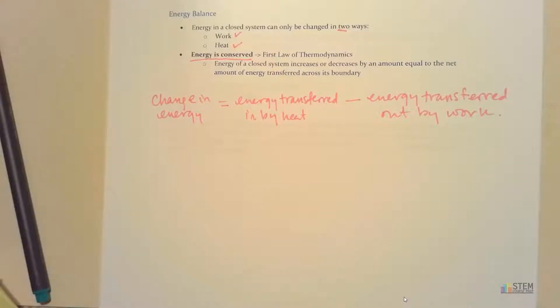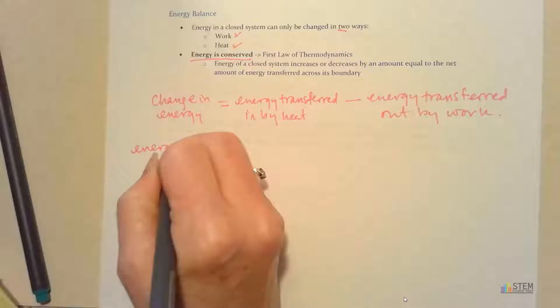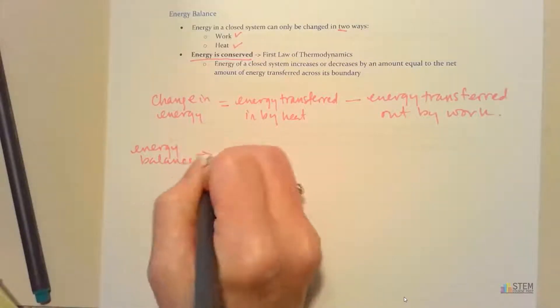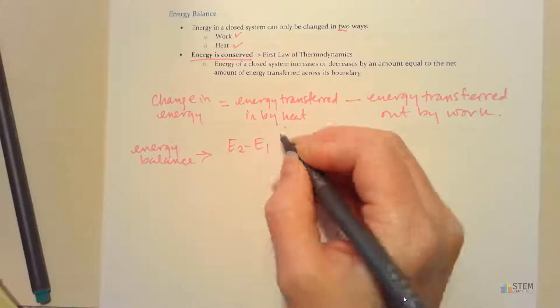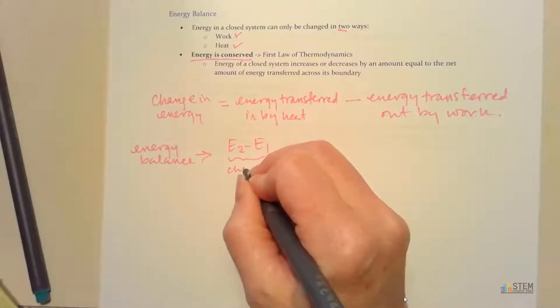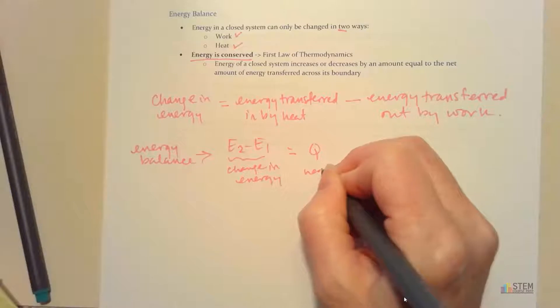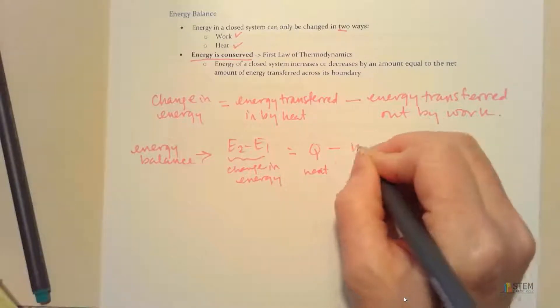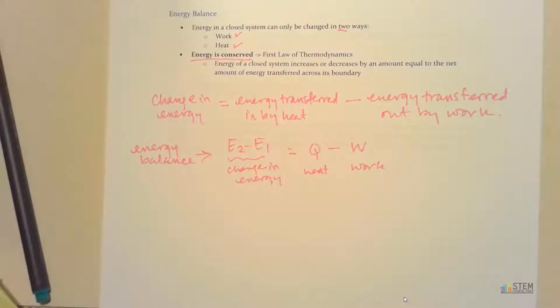Now let's put it in terms of our variables. We're going to call this energy balance. And we can write E2 minus E1. So this is our change in energy. That's got to equal Q, that's our heat, minus work, which is W. So now we've got this relationship with change in energy.